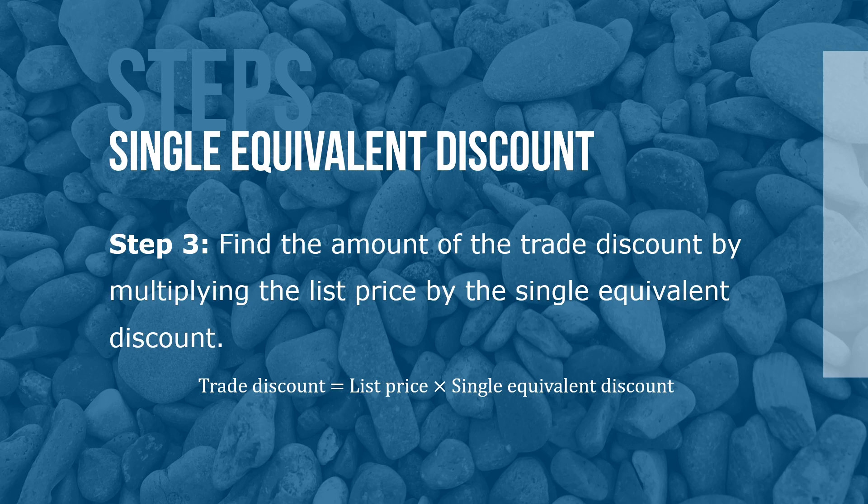Step 3: Find the amount of the trade discount by multiplying the list price by the single equivalent discount. Trade discount equals list price times single equivalent discount.